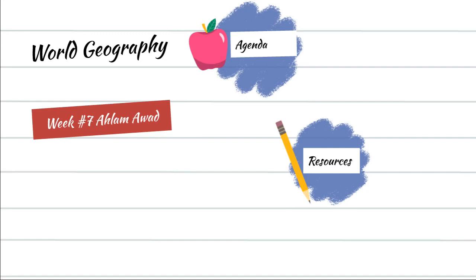We've also started to explore more of the cultural aspects of geography in terms of cultural diffusion and how culture and society define and affect identity formation. Now we're going to start going into more of the interactions between different countries, how these countries define their economy, how different lifestyles affect political choices, individual careers, and trade interactions with other countries. Let's quickly look at our agenda.